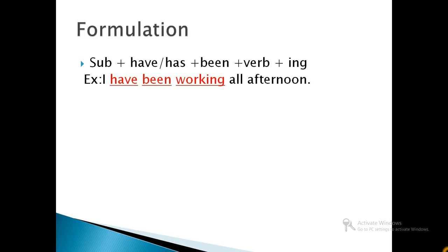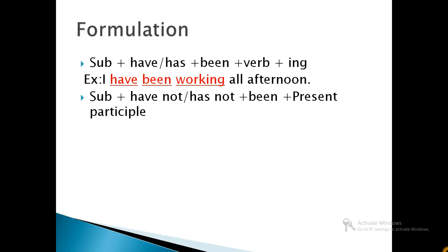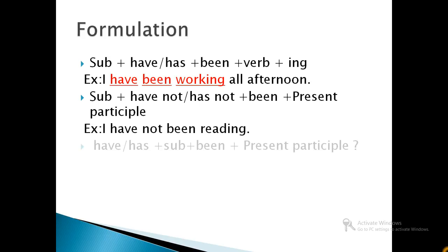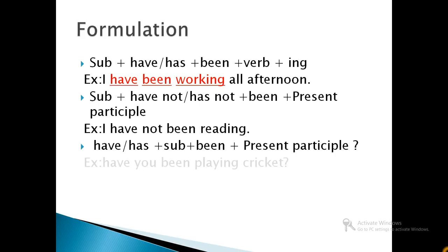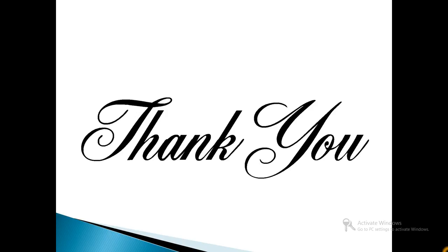For negative sentences, we use subject plus have or has plus not plus been plus verb plus ing. For example, I have not been reading. For questioning, we use have or has plus subject plus been plus present participle. For example, have you been playing cricket? This is all about present tense. Thank you for watching. Please subscribe.